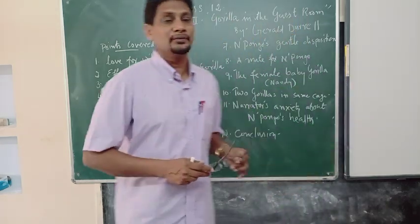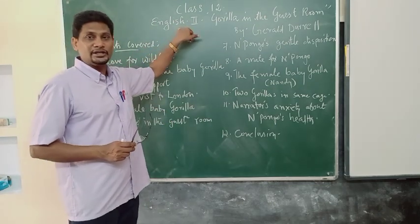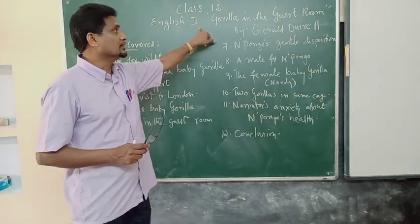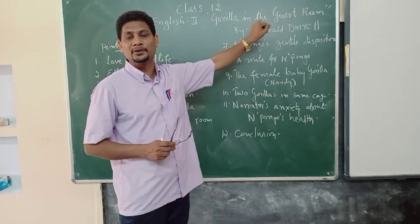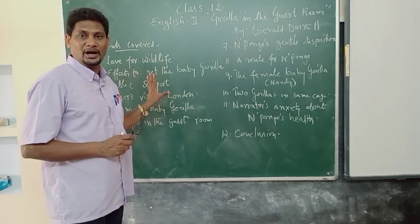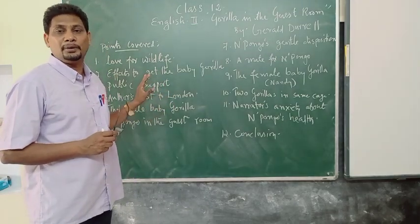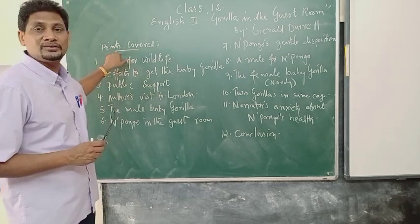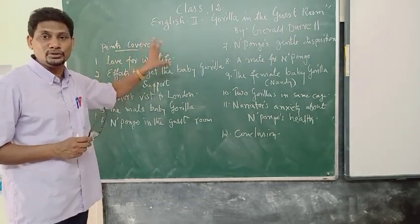We were learning English Literature, Chapter 7 — that is 'Gorilla in the Dressing Room.' Almost half of it we have done. Let me remind you about what we have already learned — the points that are already covered or we are going to cover.